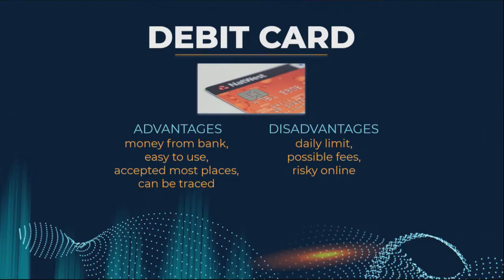Debit cards are very similar to credit cards. The advantages of a debit card: the money comes from your bank — you're basically using a piece of plastic to say, 'take money directly from my account; this is my money.' It's very easy to use, a lot of people have debit cards now, it's accepted in most places, and it can be traced because the number is tied to your bank account.